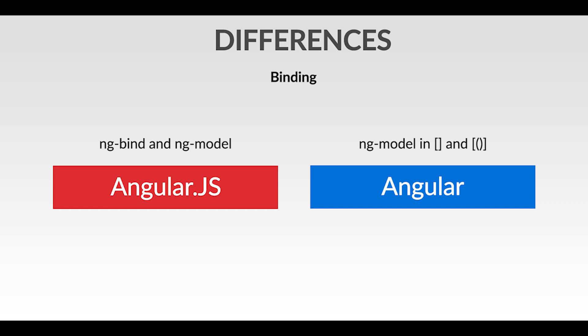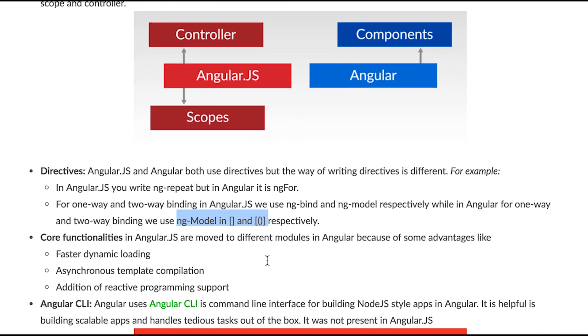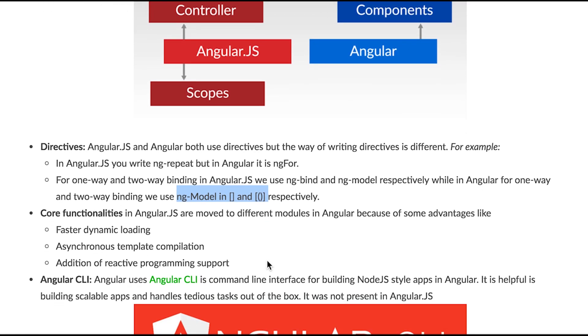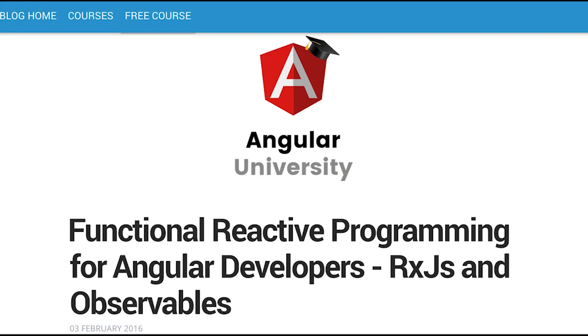Another difference is core functionality. In AngularJS the core functionality is in a different module, but in Angular it is also in a separate module — this is due to faster dynamic loading and asynchronous template compilation. Angular also adds reactive programming support; a link to learn more will be in the description.